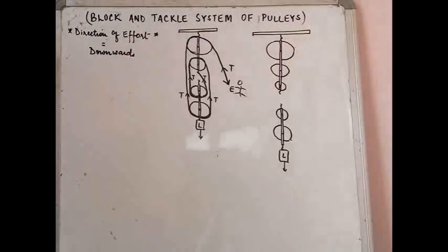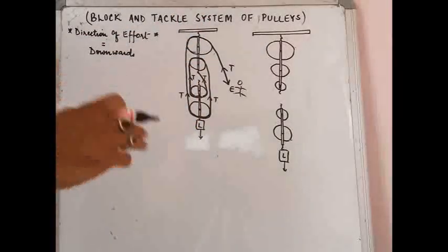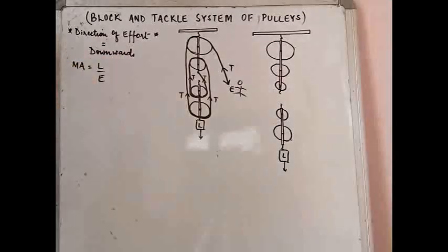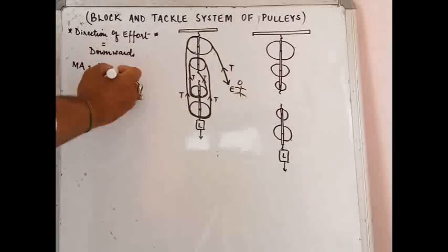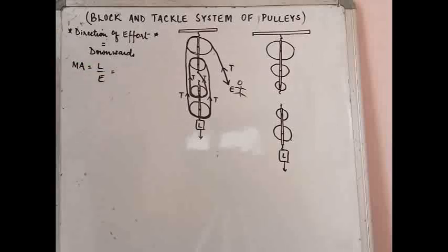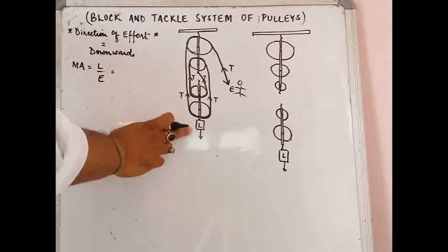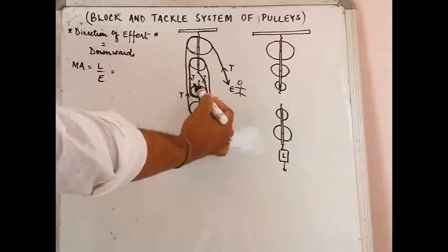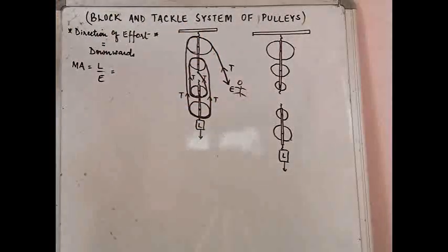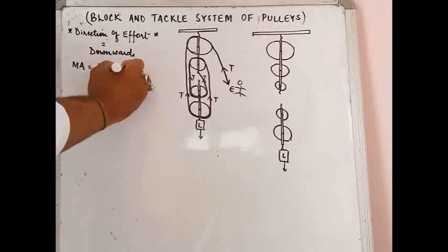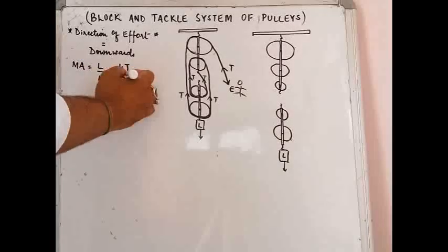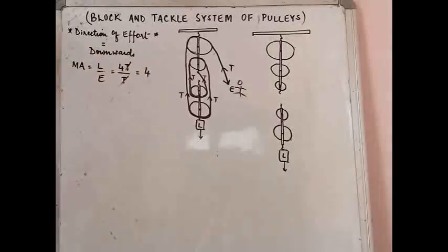This machine will pull the load up, so we study the MA value. MA equals load upon effort. The load is being supported by 1, 2, 3, 4 parts of the tackle, so load equals 4T. The effort equals single T. T cancels, giving a mechanical advantage value of 4. MA = 4 means MA is greater than 1, so this system acts as a force multiplier — it makes your work easier.